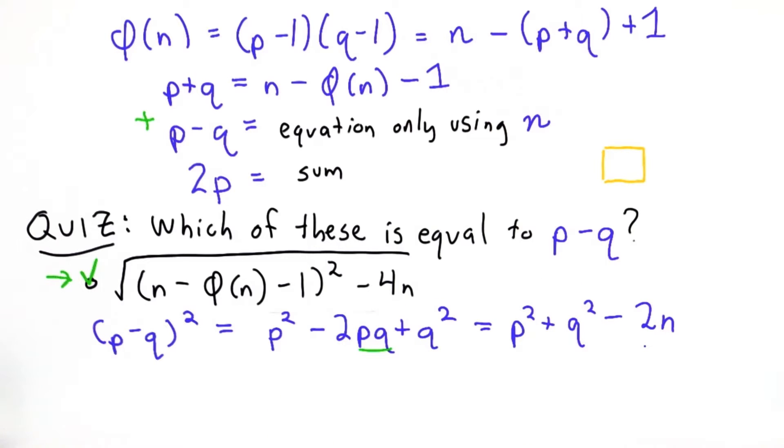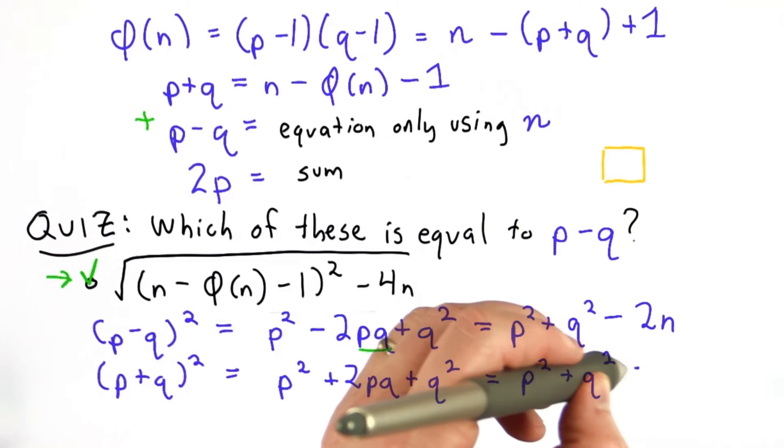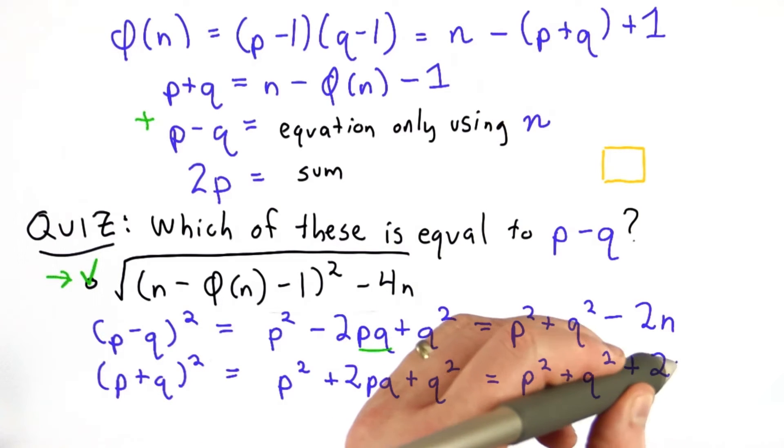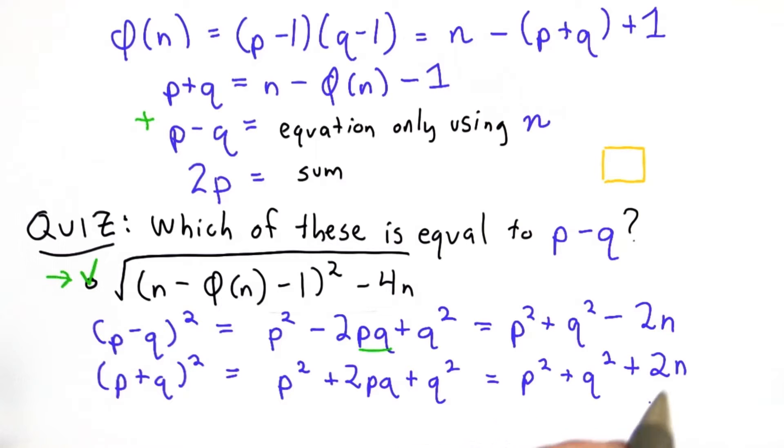We've still got these terms of p squared and q squared. If we want to get an equation all in terms of n, we need to get rid of those. But we also know what p plus q is, so let's try squaring that. And when we square p plus q, we get p squared plus 2pq plus q squared, which substituting the n for pq is equal to p squared plus q squared plus 2n.